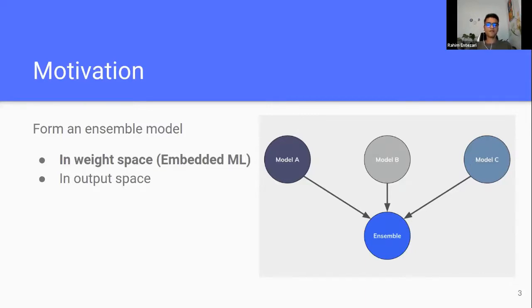For example, if you want to make ensembles in output space, we are in this kind of research interested in embedded machine learning, such as resource-constrained devices, where we don't have enough space to store three models. So if you want to make ensembles in output space, we need to store all of them, run inference over all of them, and do a majority vote, which is not practical in resource-constrained devices. Hence, we are interested in weight-space averaging.